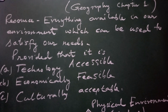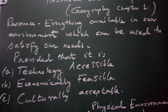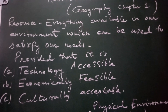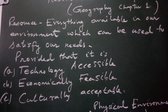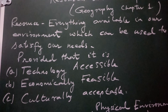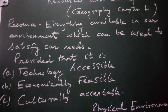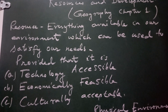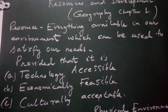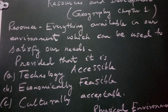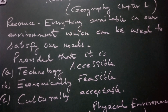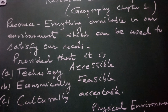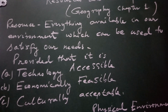In our definition, we have included three conditions. The first condition is technologically accessible, the second one economically feasible, and third culturally acceptable. So our definition of resource will be: everything available in our environment which can be used to satisfy our needs, provided that it is technologically accessible, economically feasible and culturally acceptable — it is termed as a resource.